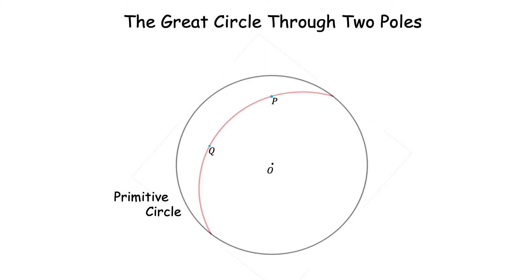But two points in a plane do not define a unique circle. So for example, this is another circle passing through the same points P and Q, but this is not a great circle. So how do we find the unique circle, a great circle passing through two given poles?